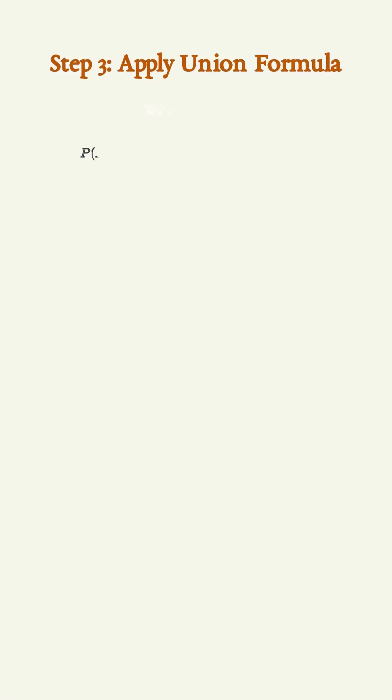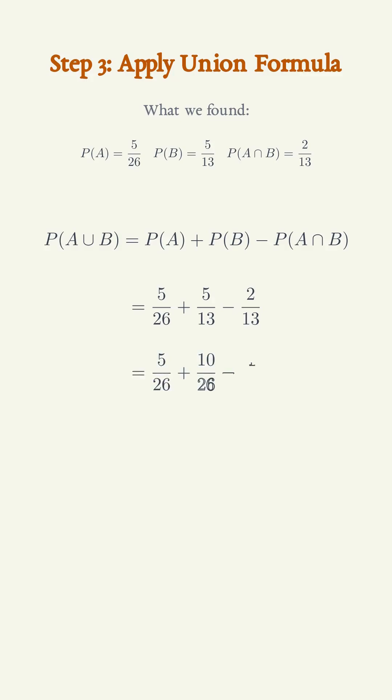Step 3. P of A union B equals 5 over 26 plus 5 over 13 minus 2 over 13, equals 11 over 26.